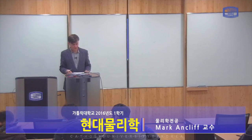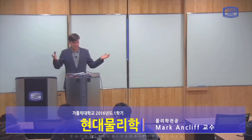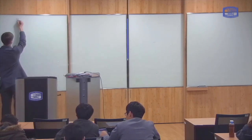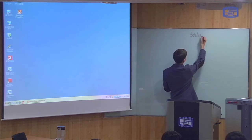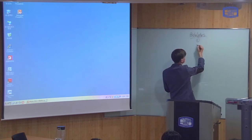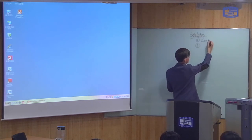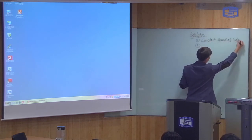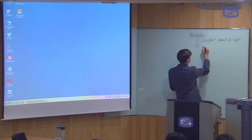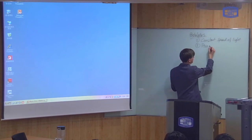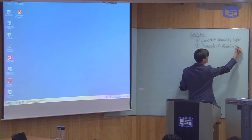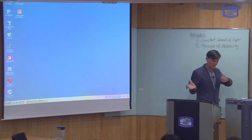Let's make a start. So last time we covered quite a lot of theory, so I want to start by giving a summary or a reminder of what we did last time. We started with the postulates of special relativity, of which there were two. The first says that the speed of light in a vacuum is constant for inertial observers. The second says that you can't tell the difference between being stationary or moving with a constant velocity.